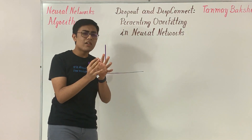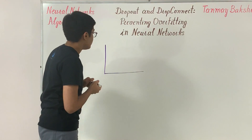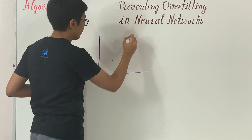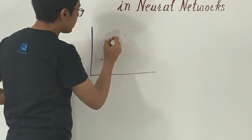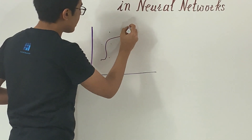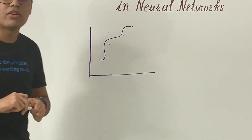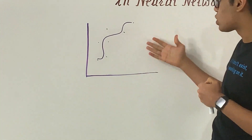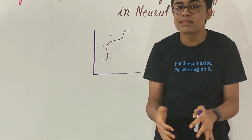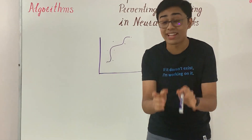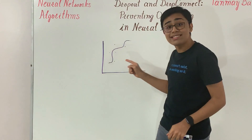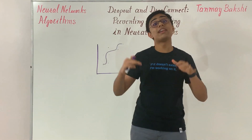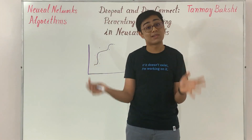A good fit is one where you're not going from point to point, but your neural network has a good idea of the structure of your data. If it understands how to separate the data points and performs well on both the training and validation sets, then you've got a good fit — and that's what you want.